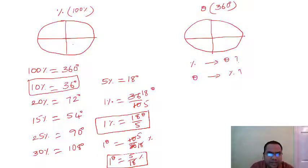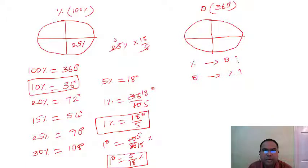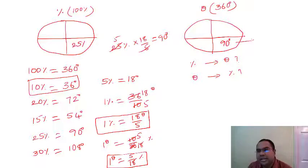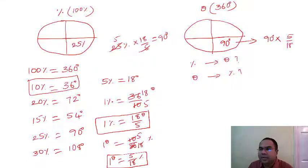Let's take a small example. If a portion is 25% and you want to convert to degrees, multiply 25 by 18/5, which gives 90 degrees. Questions can go from percentage to degrees or degrees to percentage.